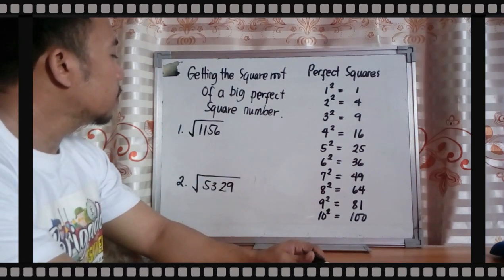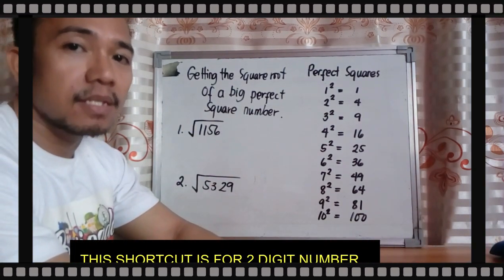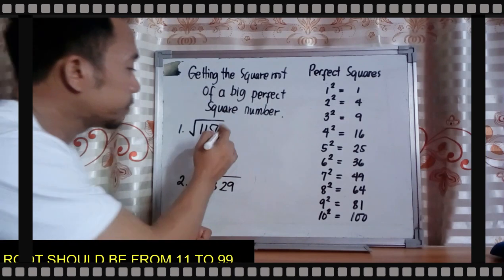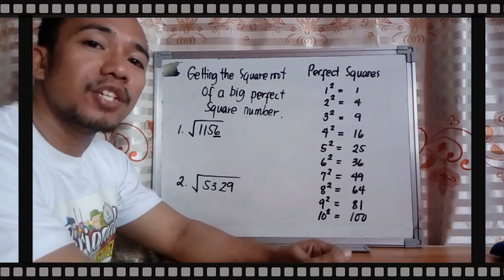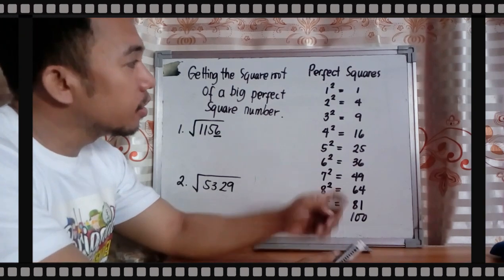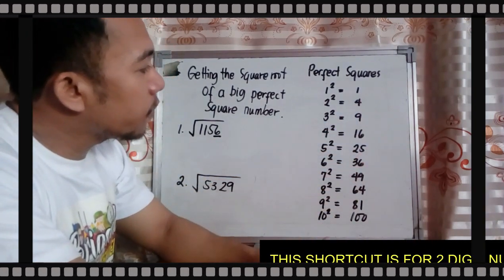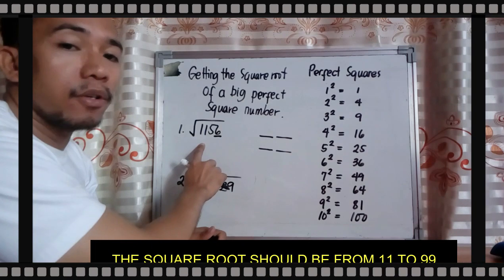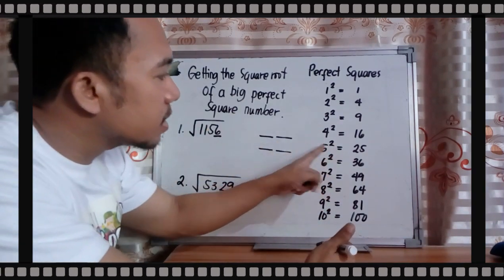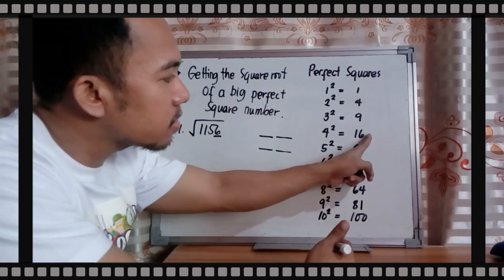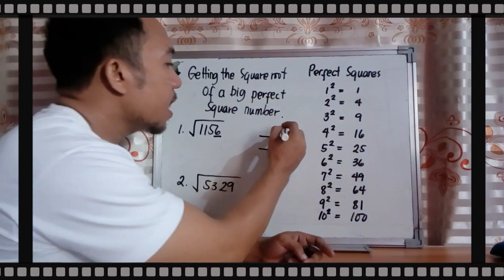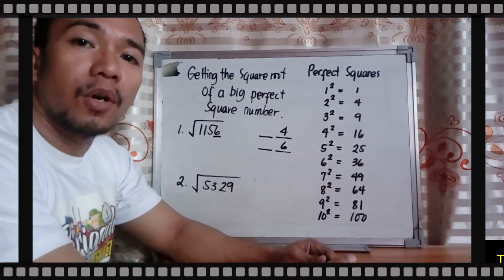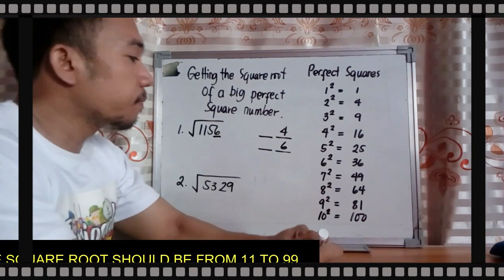Let's start. For example, what is the square root of 1,156? Look for the last digit — your last digit is 6. Therefore, the last digit of the square root (a two-digit number) is either 4 or 6, because when a perfect square ends in 6, its root ends in either 4 or 6.